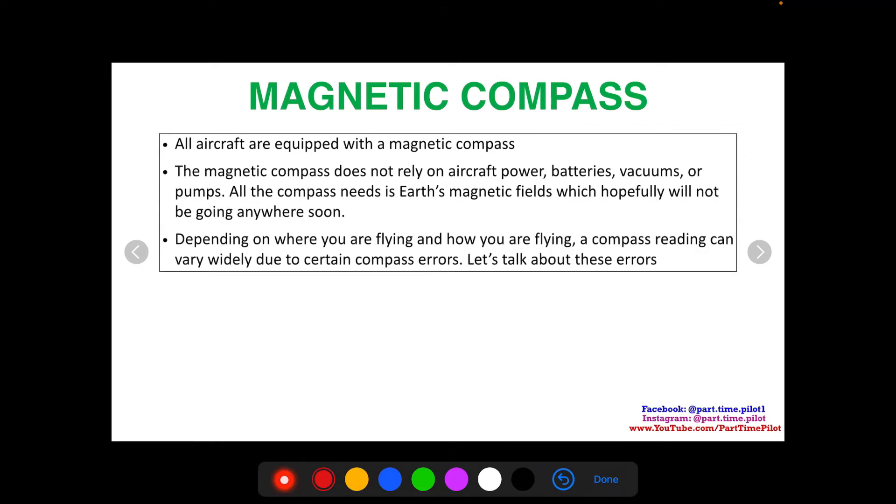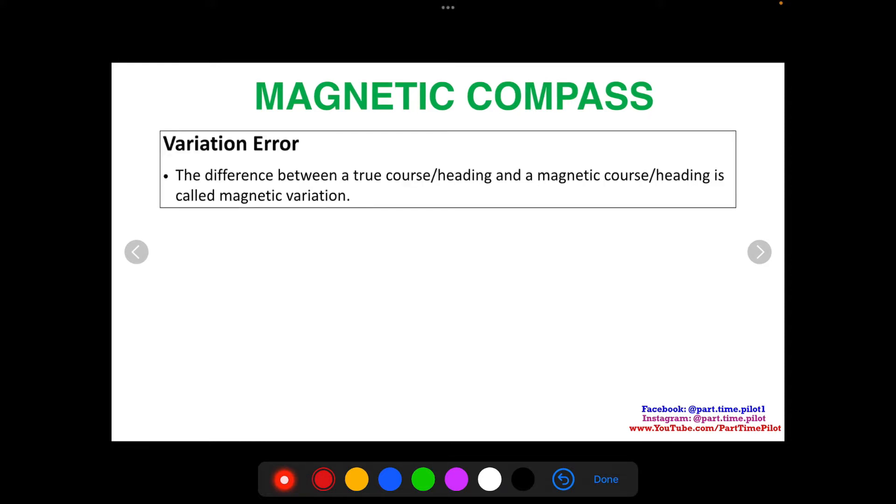Depending on where you are flying and how you are flying, a compass reading can vary widely due to certain compass errors. And this video series is going to talk about these errors. So the first error, which this video covers, is variation.